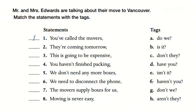We don't need any more boxes — do we? We need to disconnect the phone — don't we? G. The movers supply boxes for us — don't they? C. Moving is never easy — is it? B. So the trick here, Roger, is: if you have an affirmative statement, your tag is negative; if you have a negative statement, your tag is affirmative. Now we're going to go into another sheet.